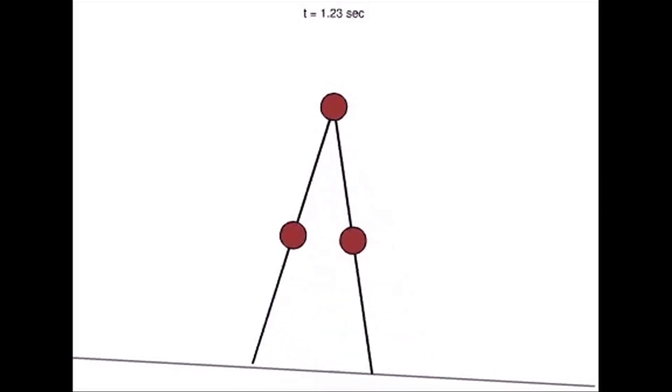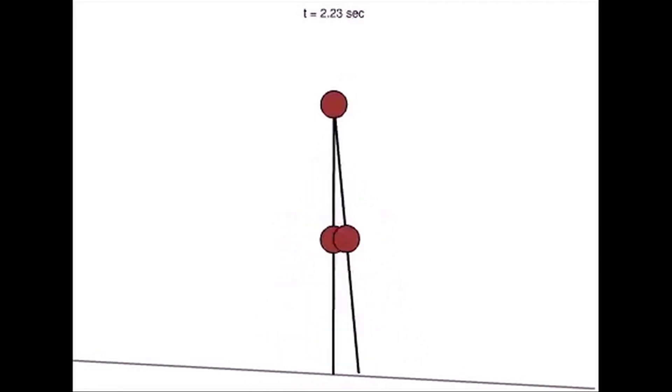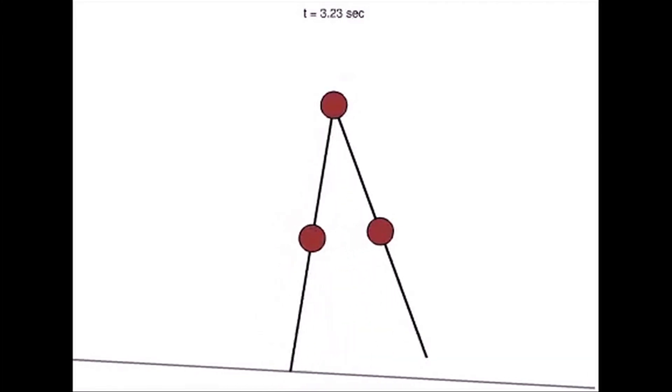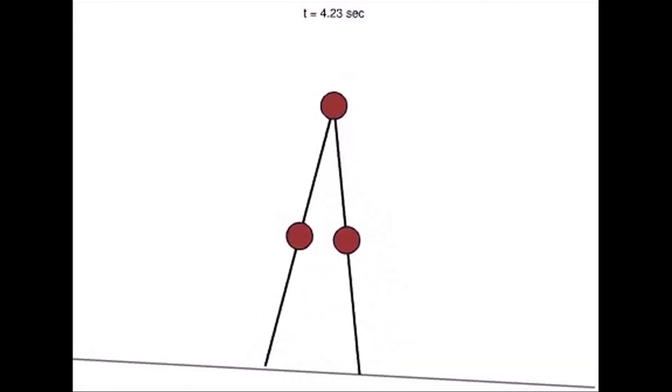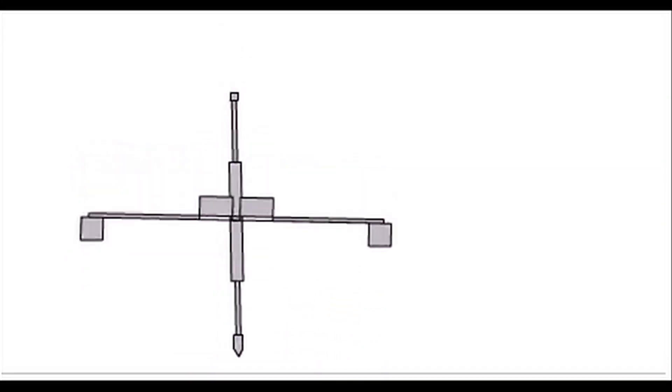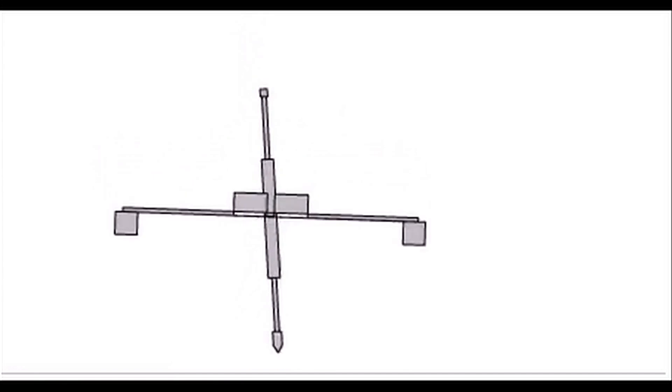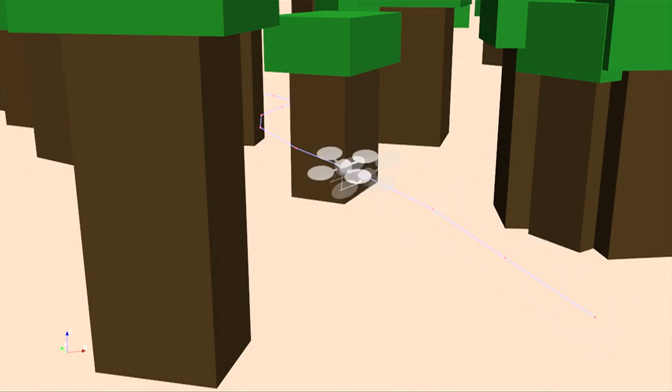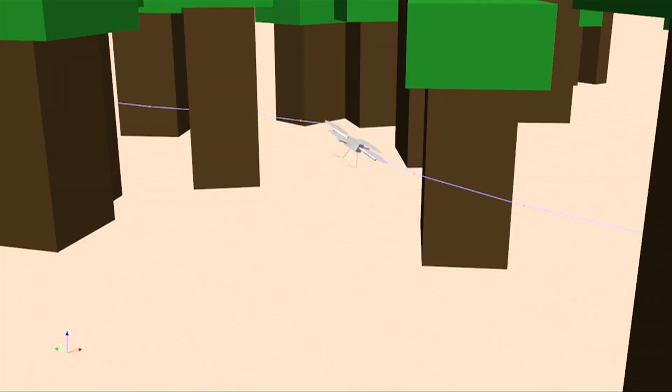We're going to see examples from very simple mathematical models of robots, from walking robots, hopping robots, basic manipulation, and basic flying robots. These simple models will be easier for us to understand analytically.